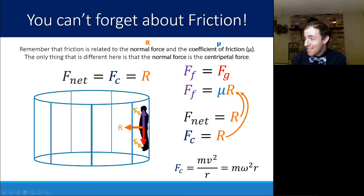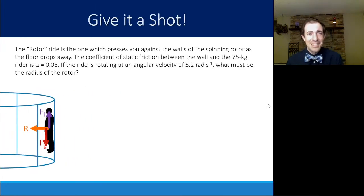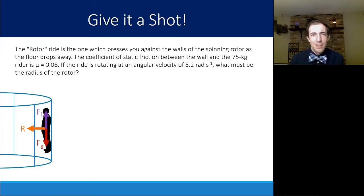So we can find FC and F net by using this equation. If we know some information about the motion, if we know that, we know R. If we know R, we know FG, we know FF, and then all that's remaining is the coefficient of friction. So let's look at that as an example here. The rotor ride is one that presses you against the walls of the spinning rotor as the floor drops away. The coefficient of static friction between the wall and a 75-kilogram rider is mu is equal to 0.06. That's actually pretty slippery. If the ride is rotating at angular velocity of 5.2 radians per second, what must be the radius of this rotor?